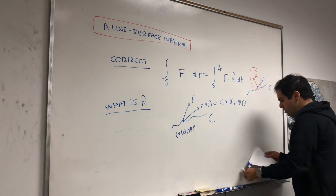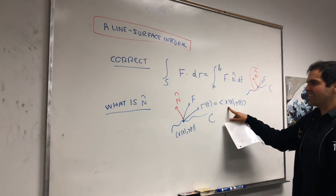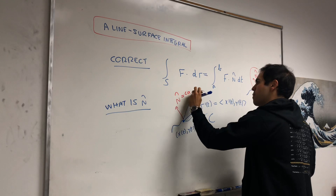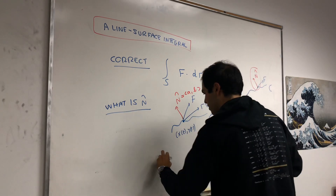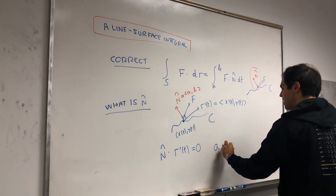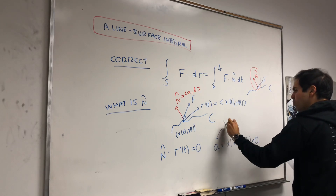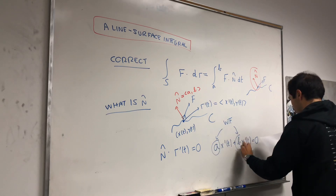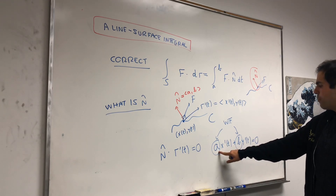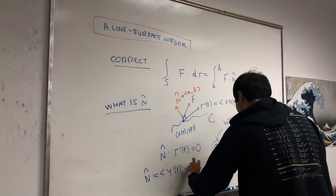It turns out you can define the normal vector as follows. You need a vector that when you dot it with (x', y') you get zero. So if n̂ = (a, b), we want n̂·r'(t) = 0, meaning a·x'(t) + b·y'(t) = 0. We want to find a and b. There are a bunch of choices, but a good one is to let a = y' and b = -x', so n̂ = (y'(t), -x'(t)).